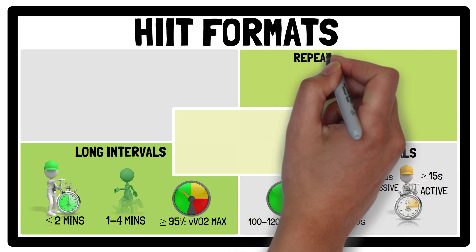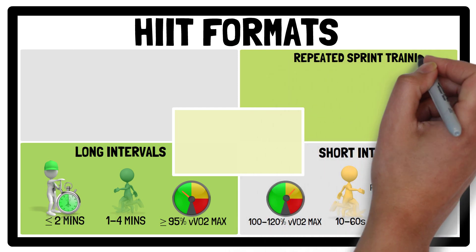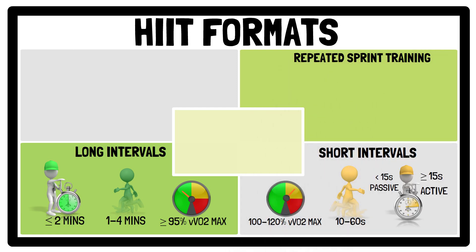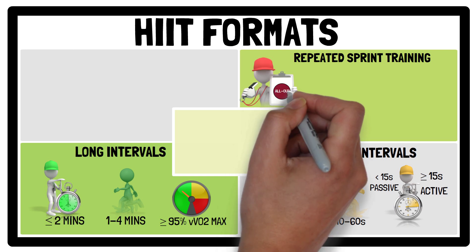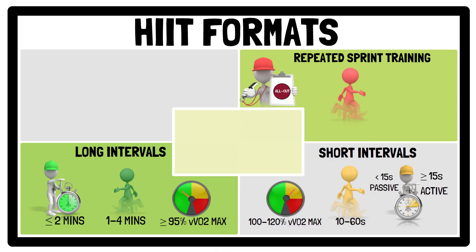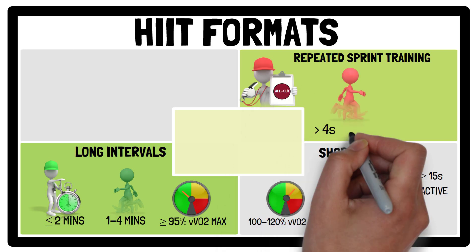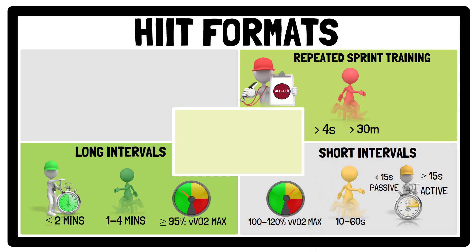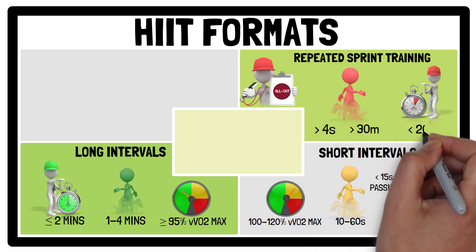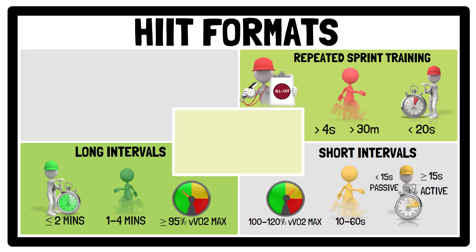For repeated sprint training, this involves performing a series of all-out sprints — for example above 4 seconds, or covering a distance above 30 m — followed by a short rest period, for example less than 20 seconds, between the sprint efforts.